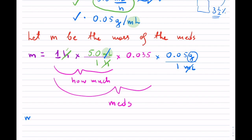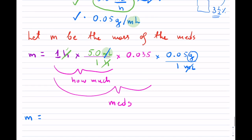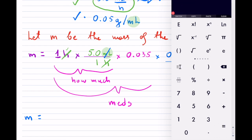So the amount of mass, now if I take all of this and multiply, so I have 1 times 5, so I take all the ones in the numerator, times 0.035 times 0.05 equals, I have a total 0.00875.